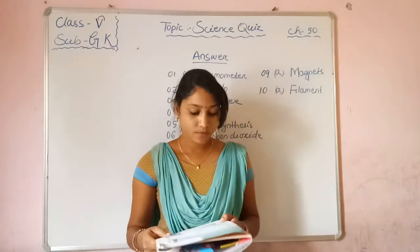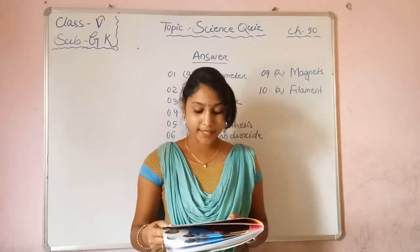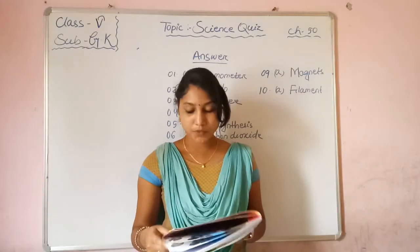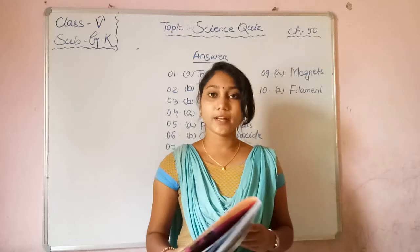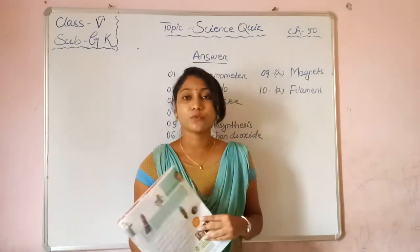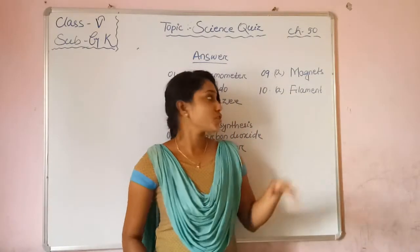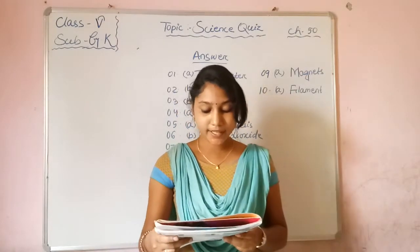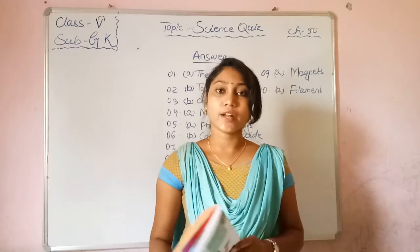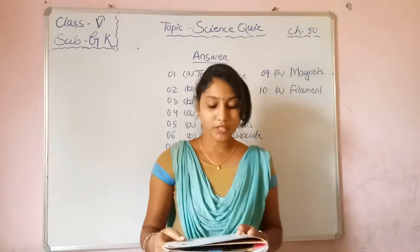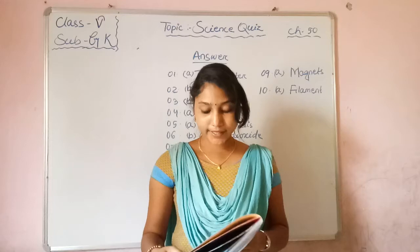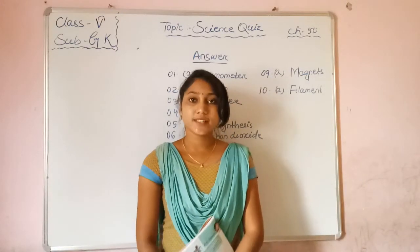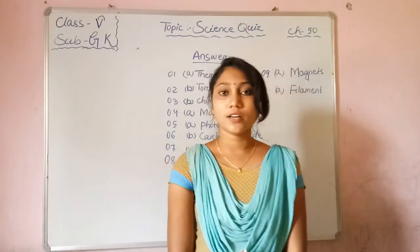Next question: The wire inside an electric bulb is known as? Option A — filament, Option B — mesh. The correct answer is Option A — filament. The wire inside an electric bulb is known as a filament. Students, this is today's class. Bye bye, take care, see you in the next class.